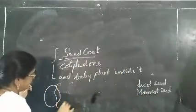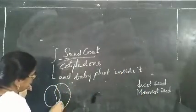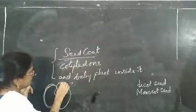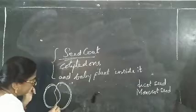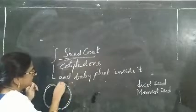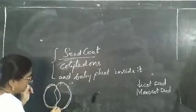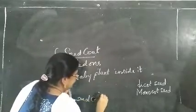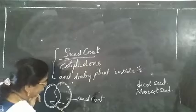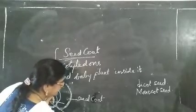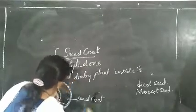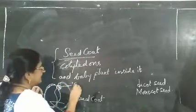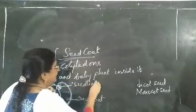So you see like this — this is the seed coat, the outer covering. These two parts are the cotyledons. And you have a small baby plant inside — a seedling or baby plant like this.